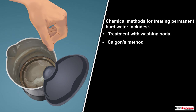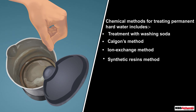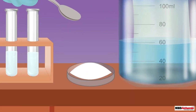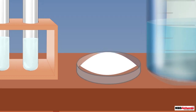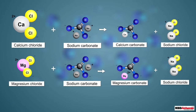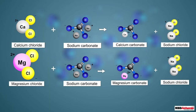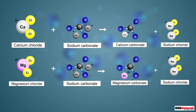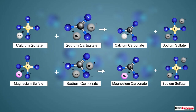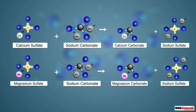Permanent hardness can be removed by chemical methods including: treating with washing soda, Calgon's method, ion exchange method, and synthetic resins method. When washing soda — chemically sodium carbonate — is added to hard water, it combines with the chloride salts of calcium and magnesium to form their corresponding carbonate salts along with sodium chloride.